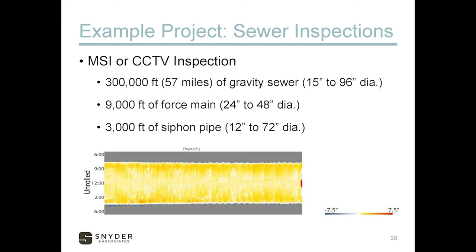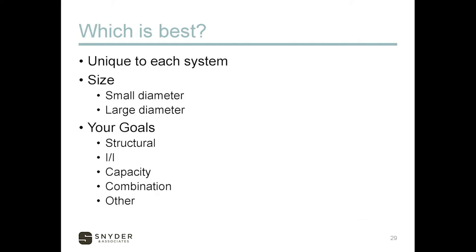On our example project, we did MSI or CCTV inspection for about 57 miles of gravity sewer, plus a significant amount of force main and siphon pipe. The question of what inspection to use is unique to each system. Whether you have small or large diameter pipes will drive what technology is most worthwhile. Your goals also matter — are you looking at structural integrity, I&I, inflow and infiltration, reduced capacity, or as is most likely the case, a combination of those things? That can drive what inspection you use.